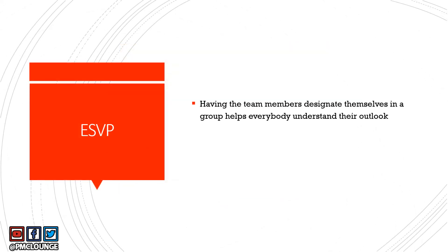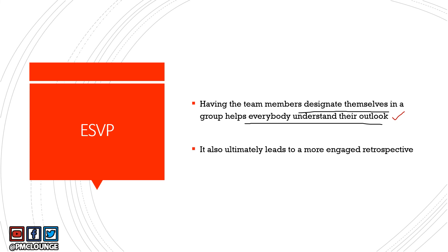Finally, a few last words on ESVP: having team members designate themselves into groups helps everybody understand what their outlook is. Someone who identifies as a Prisoner or a Vacationer — everyone in the retrospective meeting gets to understand where they are coming from, which is very important. It leads to a more engaged retrospective meeting. ESVP is popular because what you want out of a retrospective is people engaging with each other and providing suggestions and ideas on how to make things better.